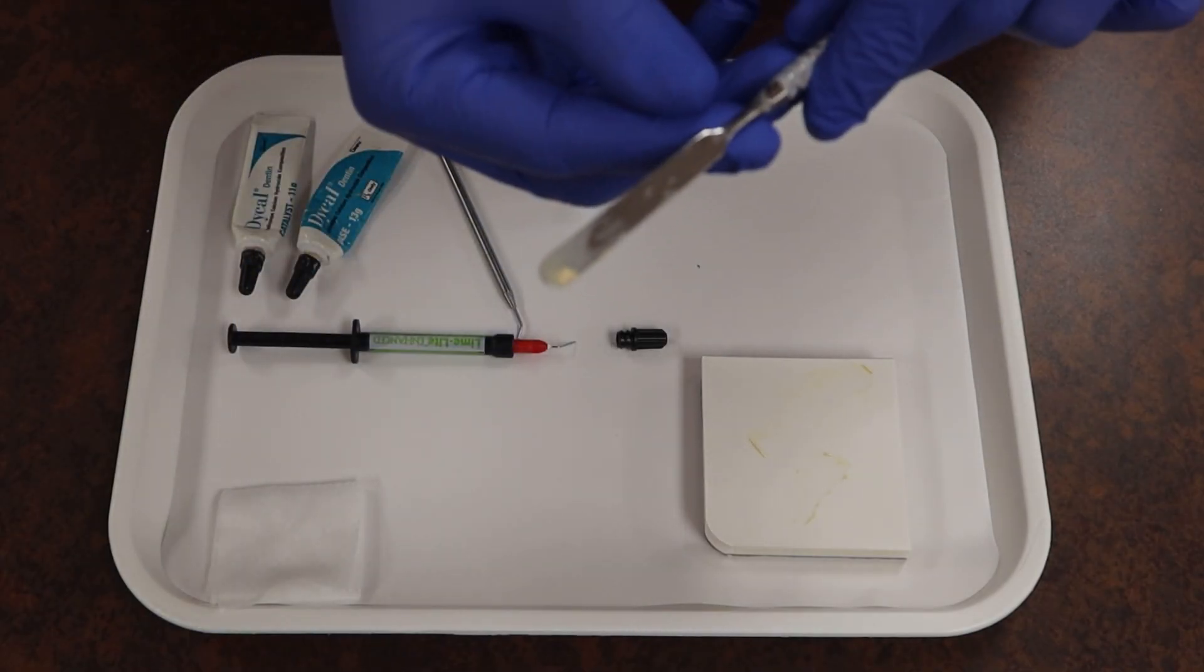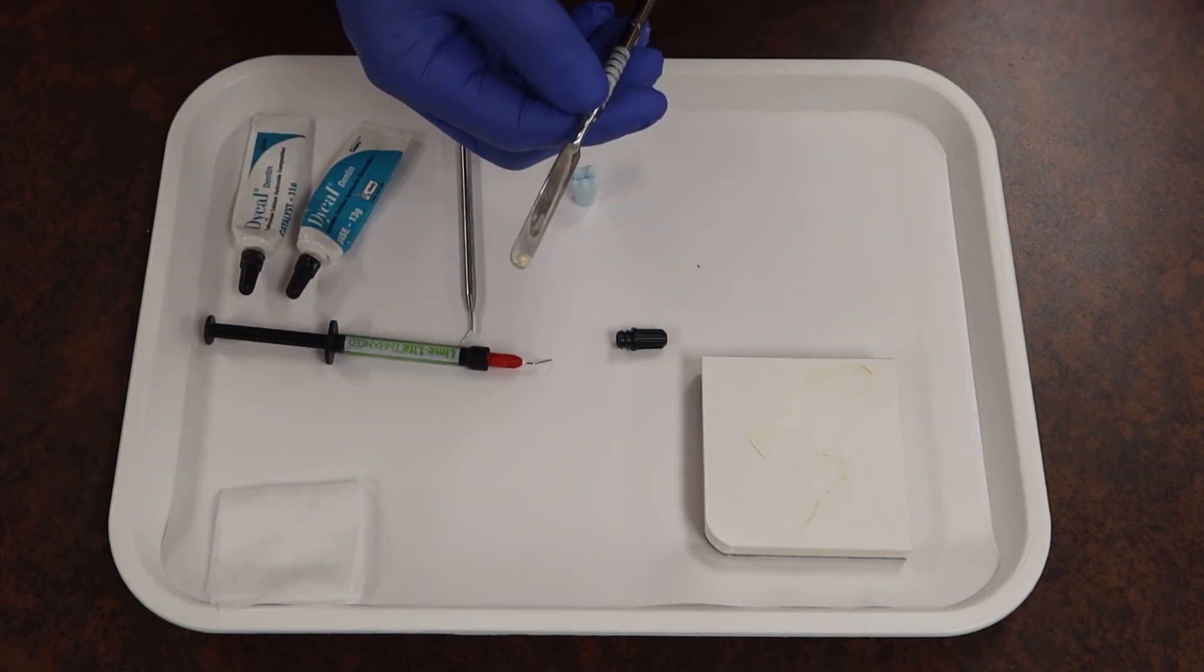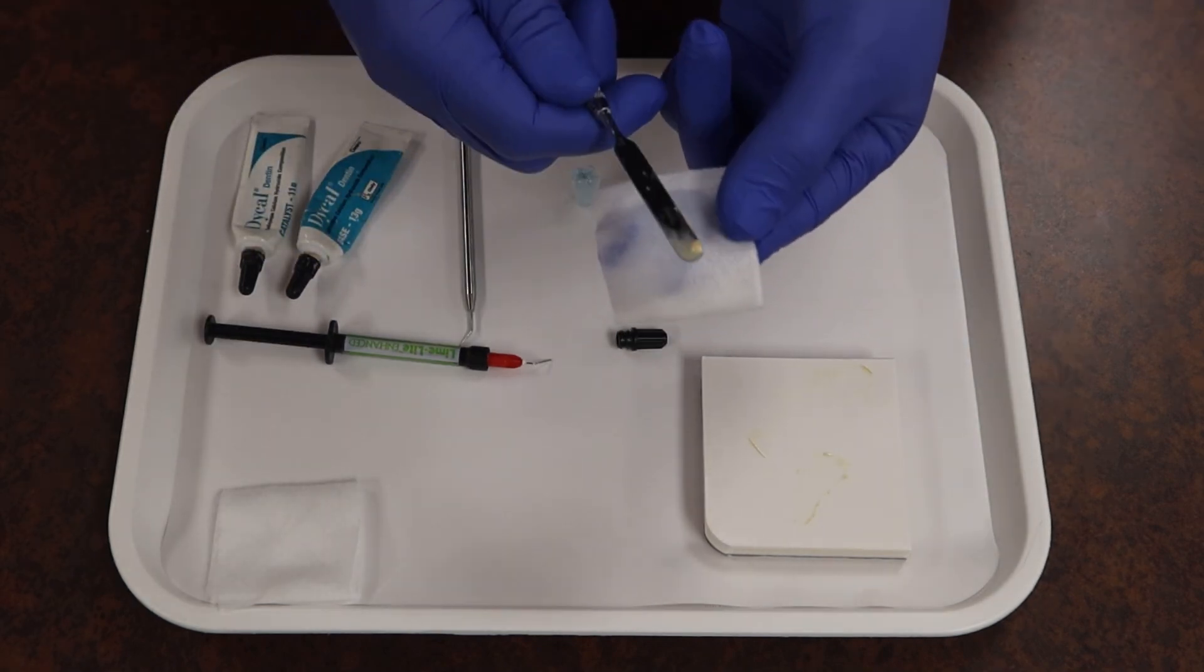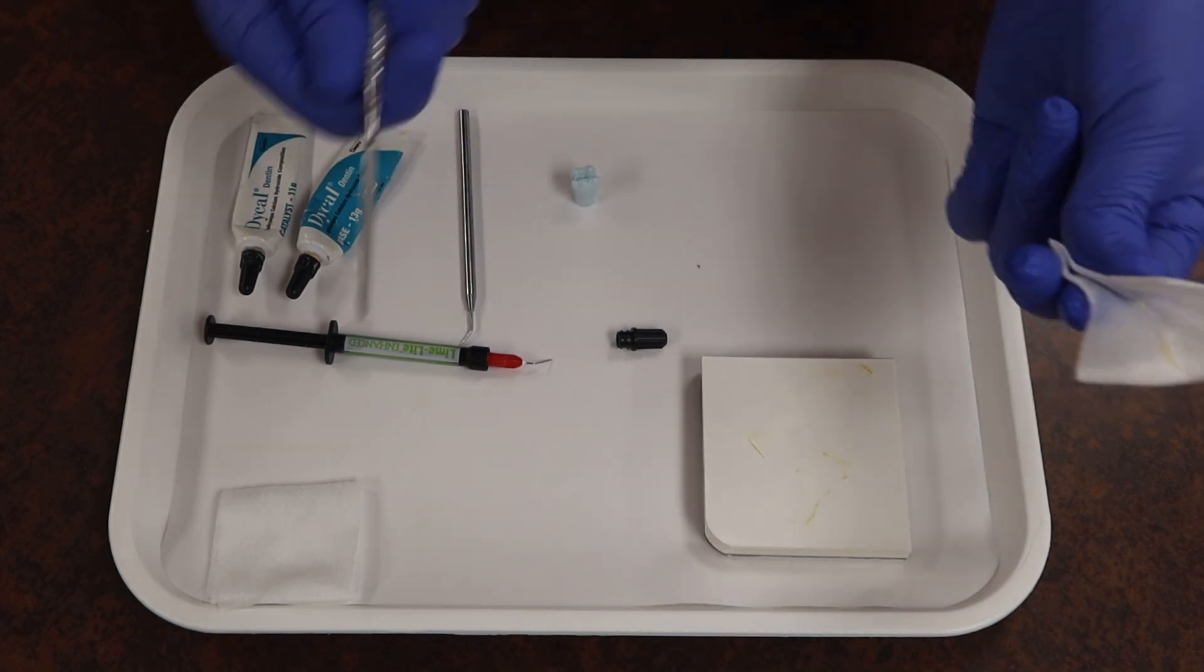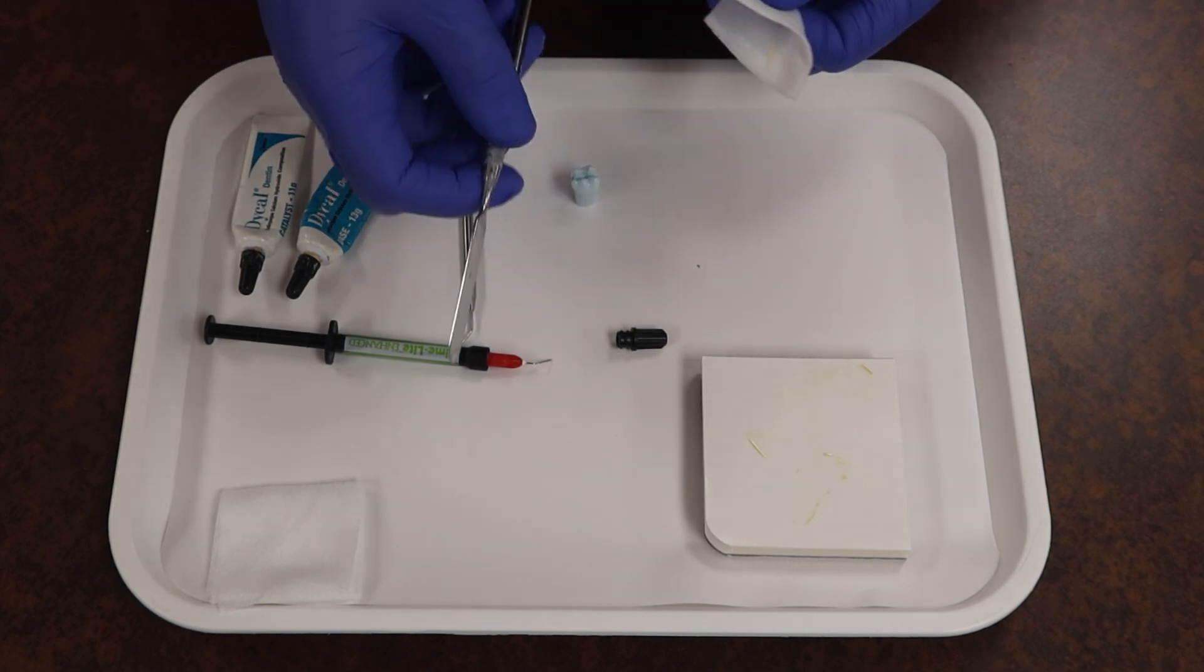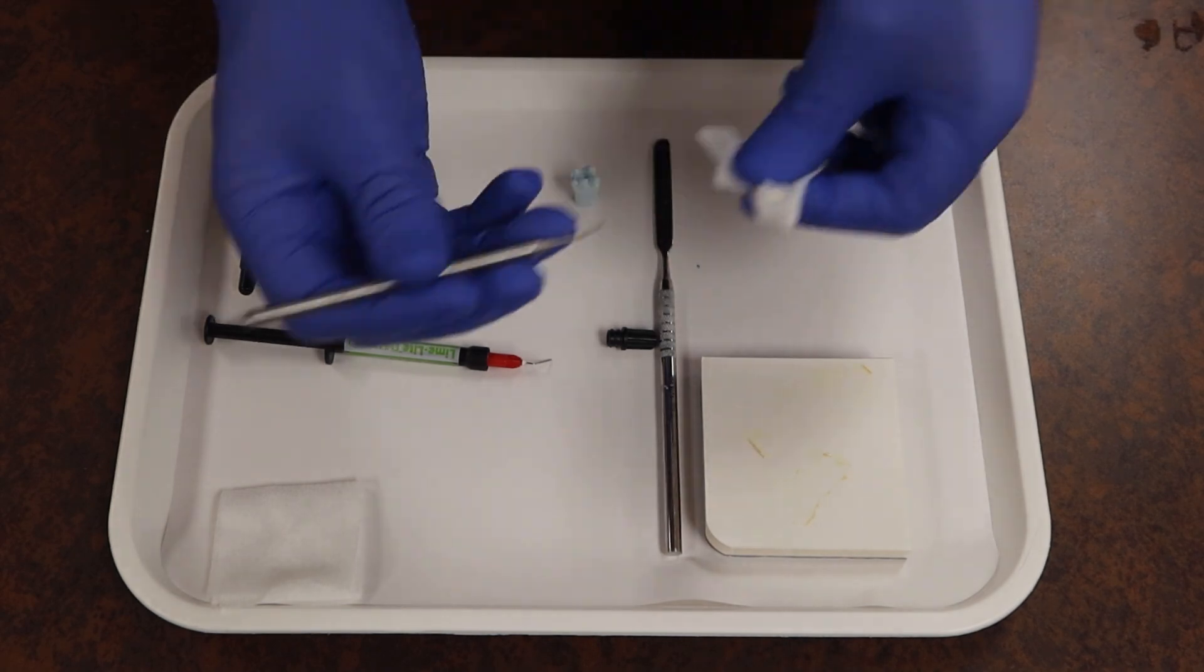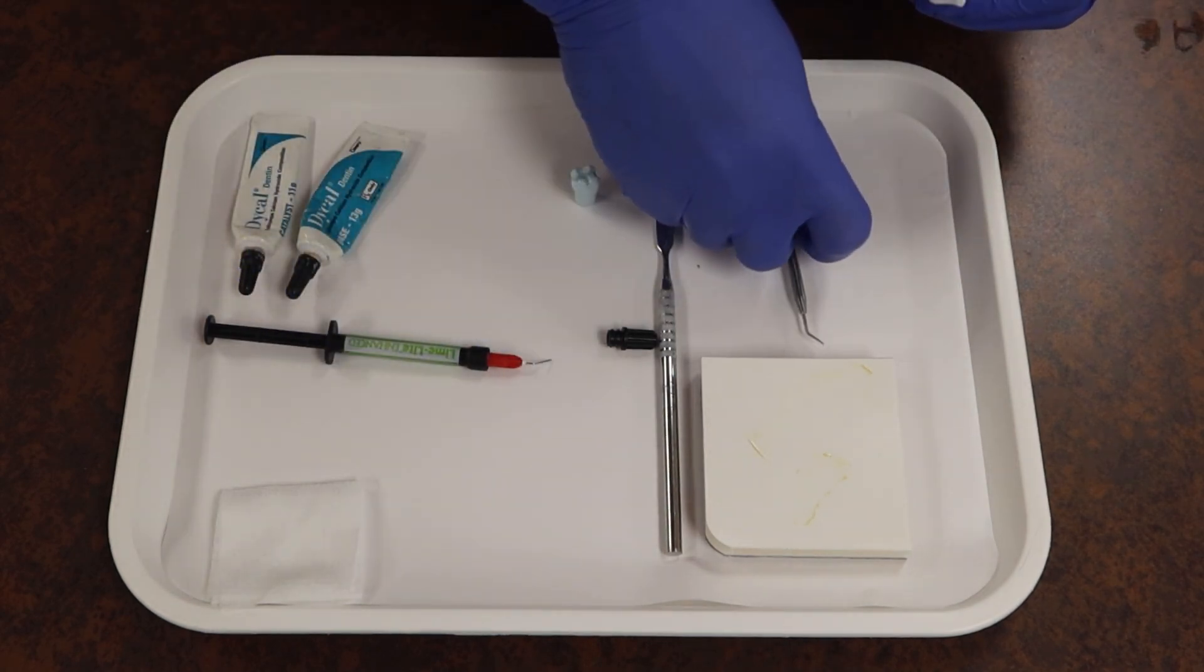Of course, whenever we're working with dental materials, we don't want to leave any material on our spatula once we are done with it. Make sure you always have a nice alcohol two by two or something nearby so you can go and wipe the material off and be done with it. Just as I have here, nice and clean for the sterilization to not have to work any harder than they already do. And same thing with your application instrument, go ahead and give that a nice smear and wipe.